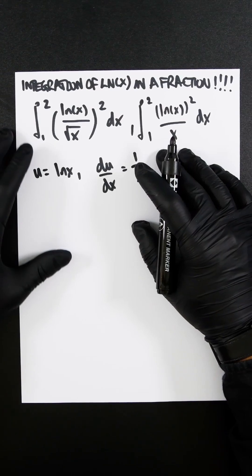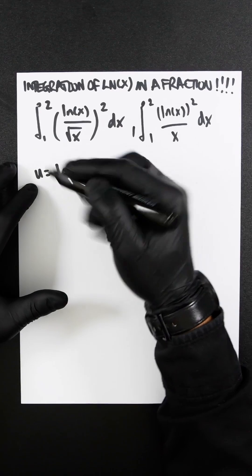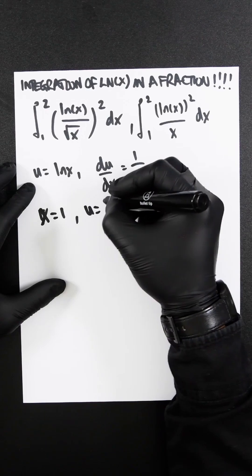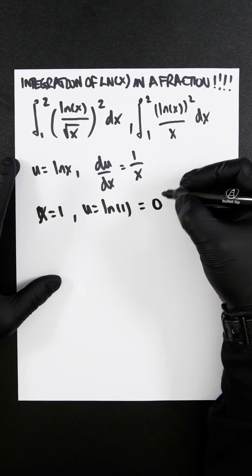But anyway, we now substitute in our parameters. So we've been given 1 and 2. So when x is 1, u equals ln 1, because I've subbed it in here, ln 1 is 0.